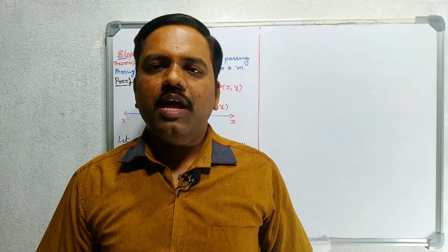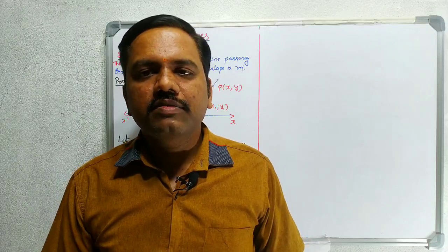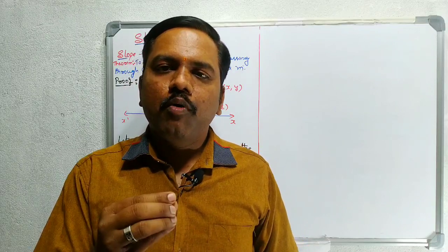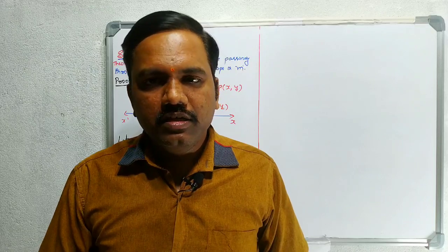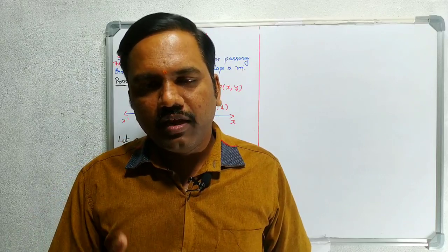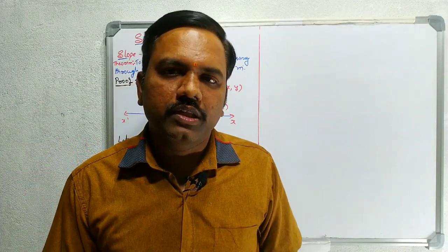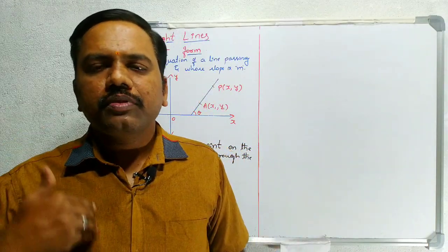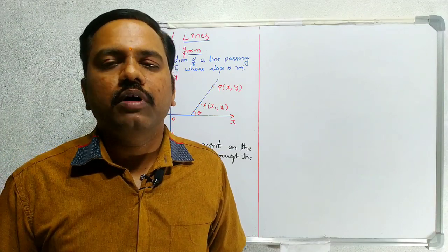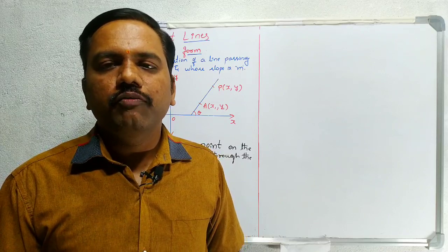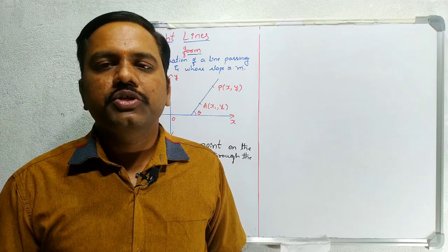Good morning students, welcome to the class. Today I continue the chapter Straight Lines. In this class I will derive some very important proofs for finding the equation of a line. The forms I will cover are: slope-point form, two-point form, intercept form, slope-intercept form, and normal form. These derivations are very, very important for your examination.